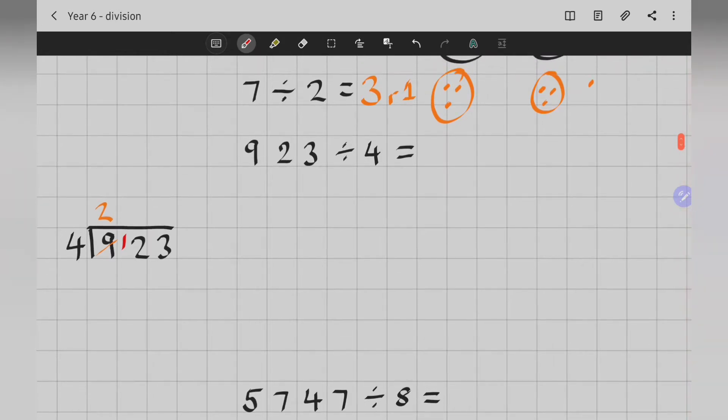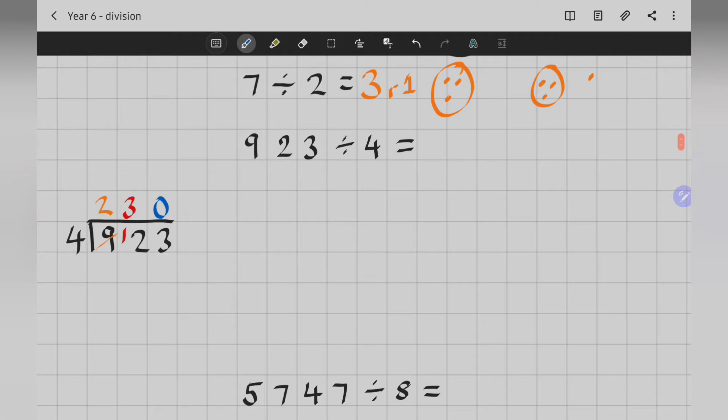4 into 12. 12 divided by 4 goes 3 times. 4, 8, 12. I've got nothing left over to pass on. 4 into 3, or 3 divided by 4. Now, I've got a problem because 3 can't be divided by 4. 0 times. But I didn't use that 3, so I've got to show it as a remainder.